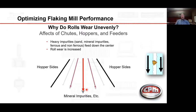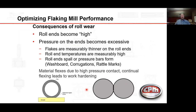Why do rolls wear unevenly? Heavy impurities such as sand and mineral feed down the center of the roll, increasing wear there. The center wears more, so the roll ends become high, causing excessive pressure on the ends. Flakes become measurably thinner on the roll ends, roll end temperatures become measurably high, and the roll ends will spall or form pressure bars. Rolls are like a tire — where they contact, they flex, and continual flexing can lead to work hardening.